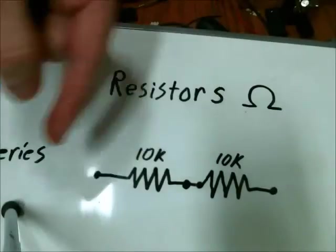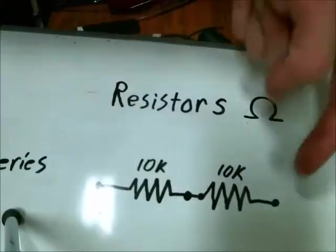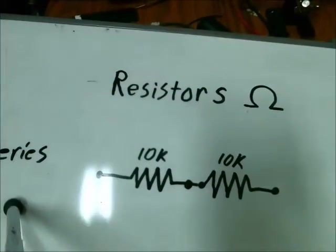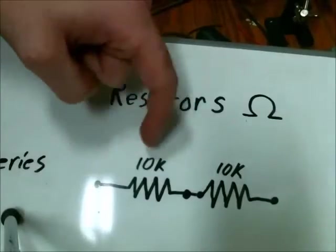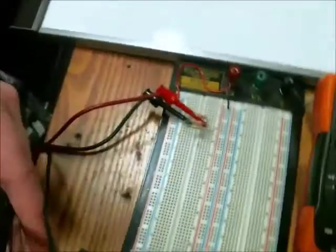So here are two resistors in series. One is connected to the other, like that formation. And if we look at the resistance in that formation, they're both the same value, 10 kilo ohms of resistance or 10,000 ohms of resistance.